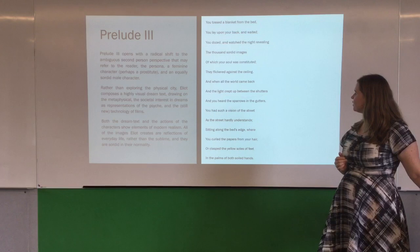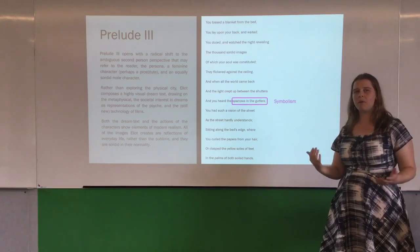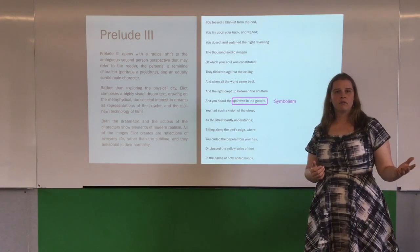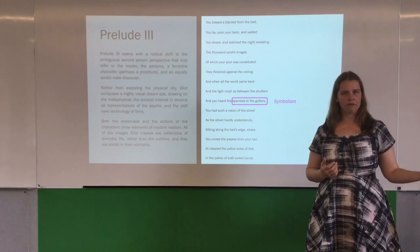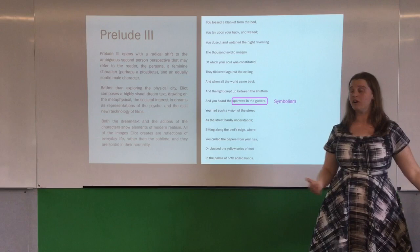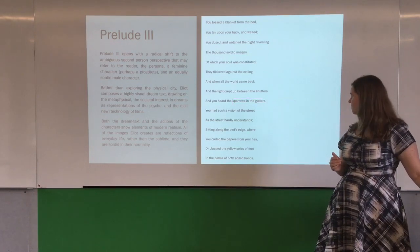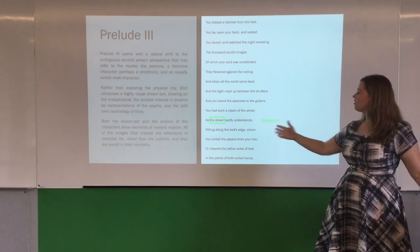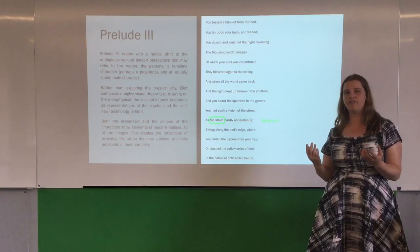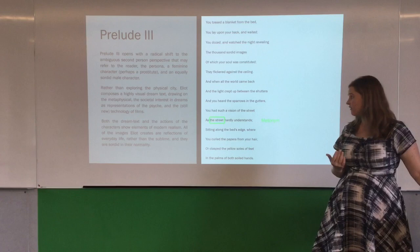We've got the motif of life continuing. The symbolism of sparrows in the gutters breaks up the poem, breaks up this prelude, because the sparrows may be a sign of spring finally arriving. But where are they? They're in the gutter — so that is also an exercise in juxtaposition. We have a metonym: what does 'the street' stand for? The street stands in for the world, the people of the city, who don't understand the decay they're living in.